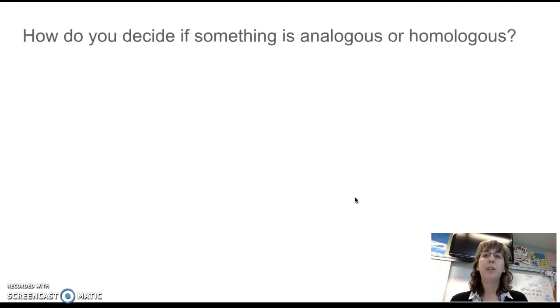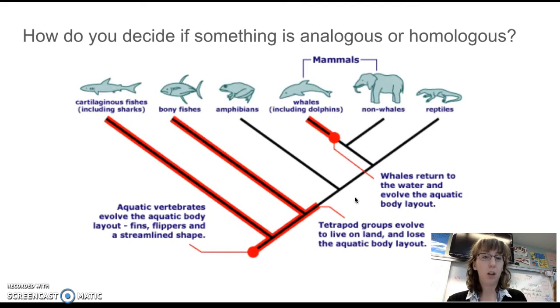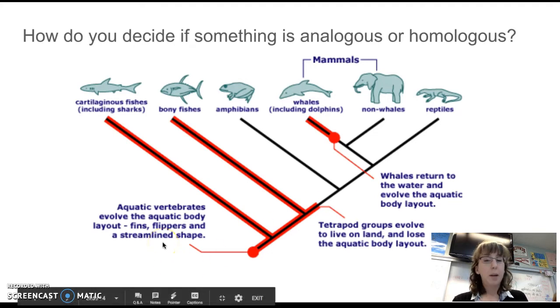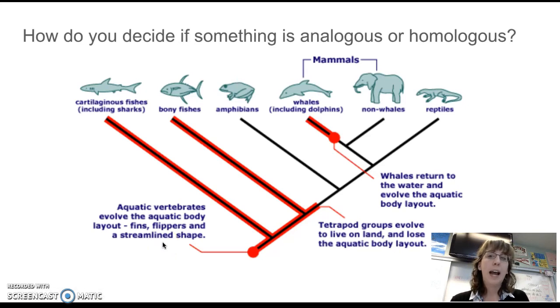My next question: how do you decide if something is analogous or homologous? This is from station four. One way to look at it, you got to look at the relationships. Here we're talking about having kind of streamlined bodies. The correct name for that is called fusiform, and having, like, being adapted to the water. As you can see, these guys are adapted to water, but not amphibians, not whales, and reptiles.